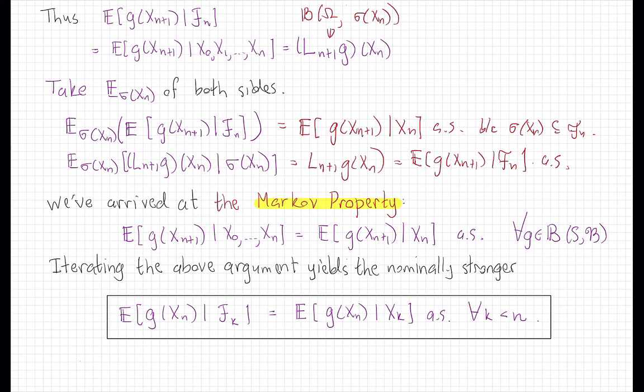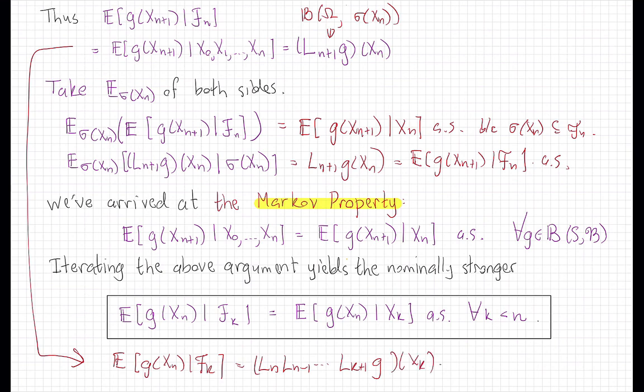It says that the process here is memoryless, conditioned on the past up to some time. It only remembers what happened at that time. And you can get that just by taking the same arguments we did here and noting that the conditional expectation of g(X_n) given F_k by an induction argument is going to be L_n, L_{n-1} down to L_{k+1} of g applied to X_k and then conditioned the same way we did in order to get this.